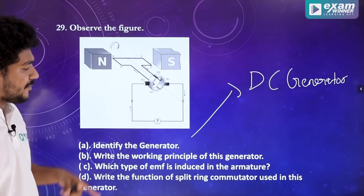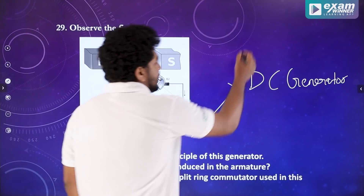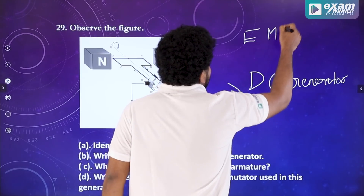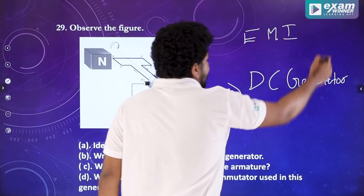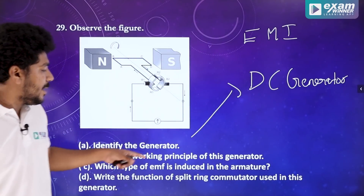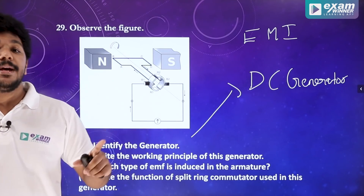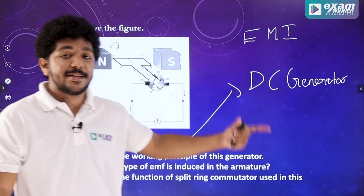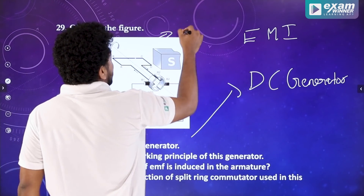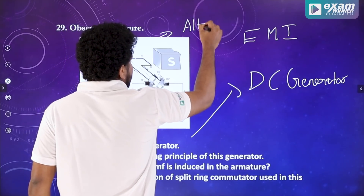Write the working principle of the generator. What is the working principle of the generator? The working principle is electromagnetic induction — EMI, electromagnetic induction. Which type of EMF is induced in the armature? What is EMF induced in the armature? It is AC — alternating EMF.